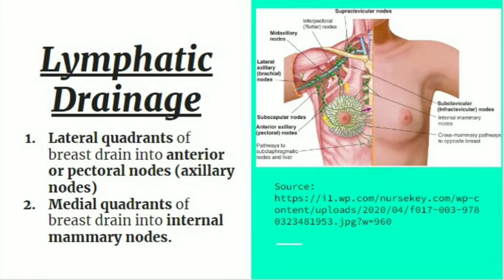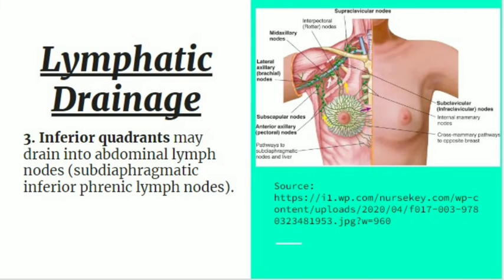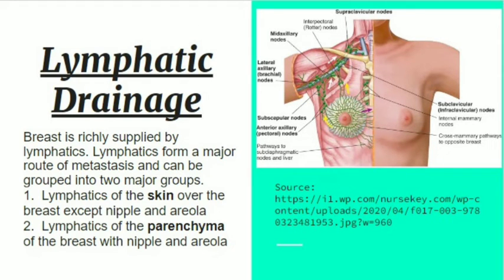In the lymphatic drainage of the breast, the lateral quadrants drain into the axillary lymph nodes, specifically the anterior group also known as pectoral nodes. The medial quadrant drains into the internal mammary nodes. Sometimes the inferior quadrants may drain into abdominal lymph nodes, including the subdiaphragmatic and inferior phrenic lymph nodes.